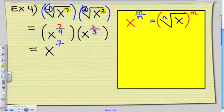And I'm going to add my exponents, 7 over 4, plus 2 thirds. However, in order to do this, I have to change to a common denominator. I know that 4 times 3 is 12.